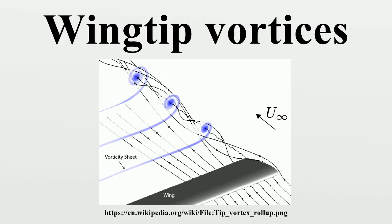Vorticity eventually rolls up into large vortices near the wing-tip, at the edge of flap devices, or at other abrupt changes in wing plan form. Careful selection of wing geometry, as well as of cruise conditions, are design and operational methods to minimize induced drag.